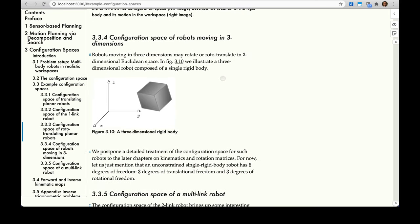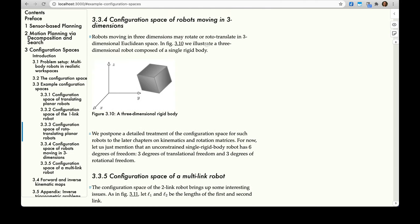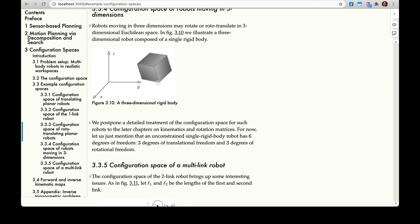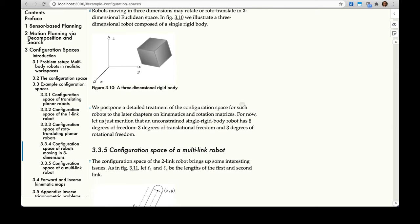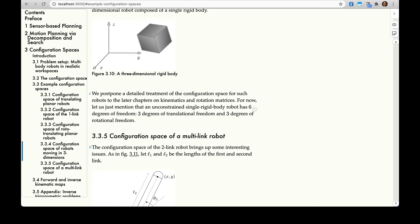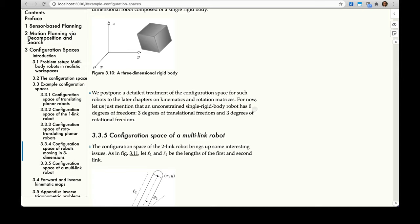Configuration space of robots moving in three dimensions. Robots moving in three dimensions may rotate or rototranslate in three-dimensional Euclidean space. In figure 3.10, we drew a cube to illustrate a three-dimensional robot composed of a single rigid body. We postpone a detailed treatment of the configuration space for such robots to the later chapters on kinematics and rotation matrices. For now, let us just mention that an unconstrained single rigid body robot has six degrees of freedom: three translational degrees of freedom and three rotational degrees of freedom. It can translate in three dimensions and it can also rotate in three dimensions.